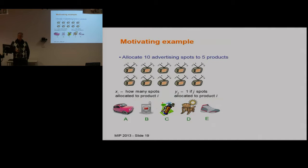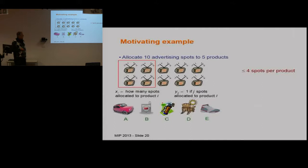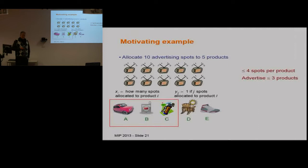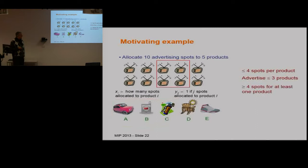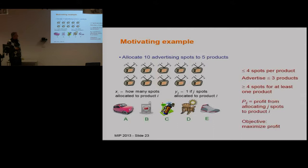Let me give you a motivating example: a small advertising problem. We have 10 advertising spots to allocate to 5 products. The constraints are: at most four spots can be allocated to a product; we advertise at most three products; and we allocate at least four spots to one of the products. The objective function is to maximise profit, given by a table — if you allocate j spots to product i, it contributes that much to profit.